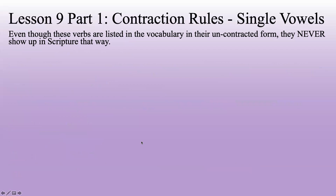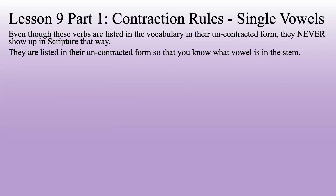Something did happen, and we'll talk about it as we get to the rules. Now, even though these verbs are listed in the vocabulary in their uncontracted form — such as laleo — they never show up in scripture that way. It would only show up in scripture as lalo for the present active indicative first person singular, because it has to contract. They're listed in their uncontracted form in the vocabulary so that you can know what vowel is in the stem; otherwise you would have no idea.